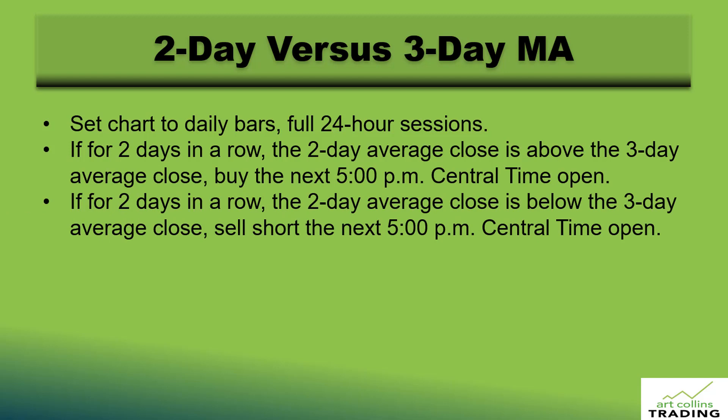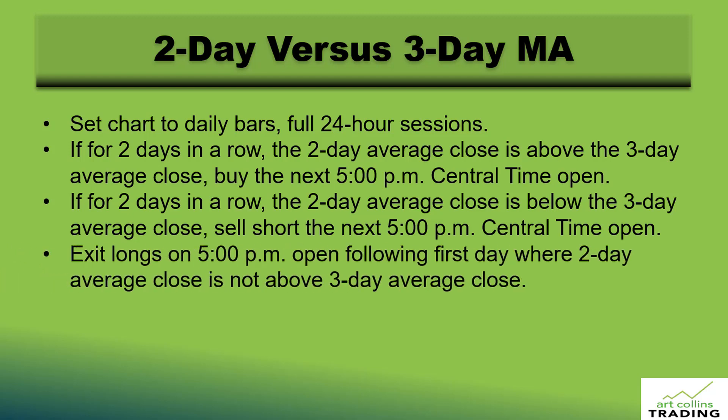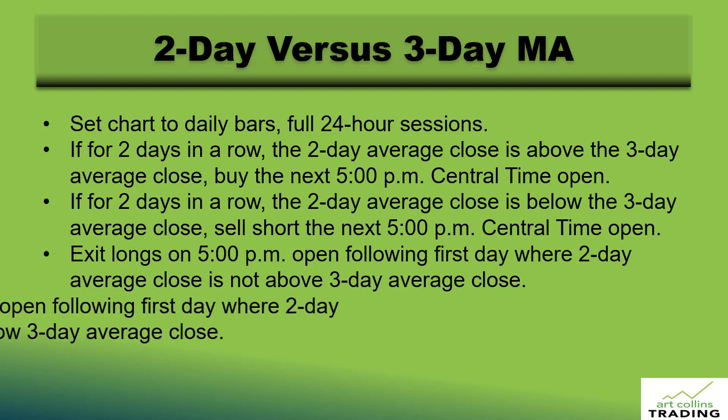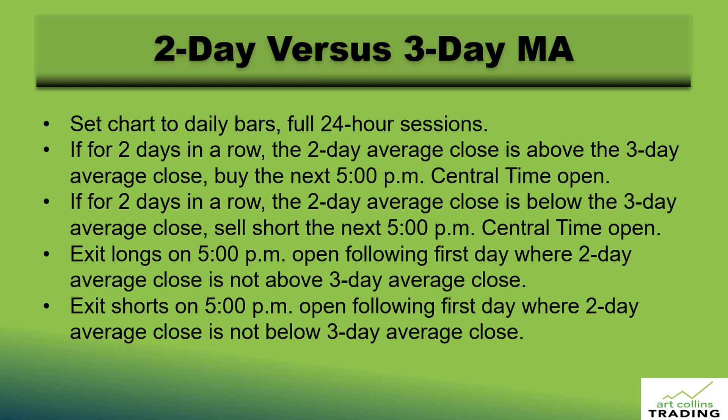The sell side is just a mirror image. If two days in a row the two-day average close is below the three-day average close, sell short — again at the 5 p.m. Central Time open. This is a perpetual system. You stay in your longs until the first day where the two-day average close is no longer above the three-day average close. You exit your shorts on the 5 p.m. open following the first day where the two-day average close is not below the three-day average close.